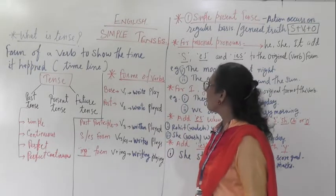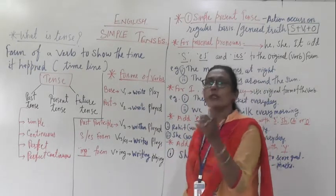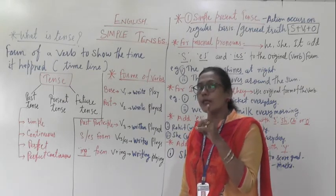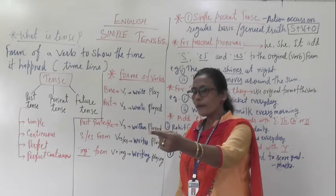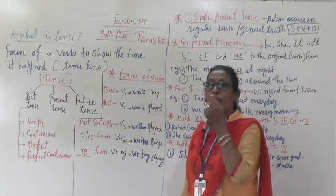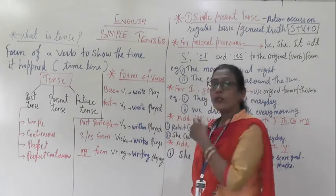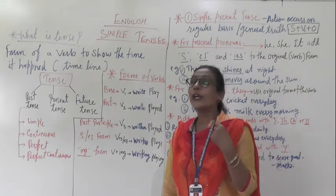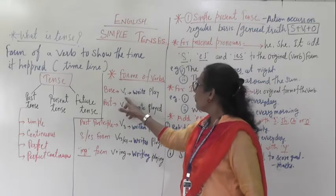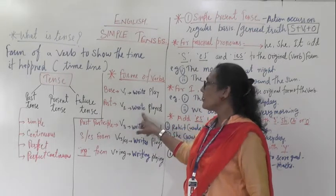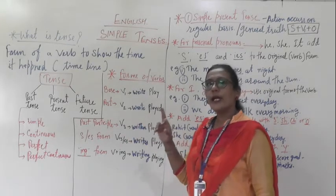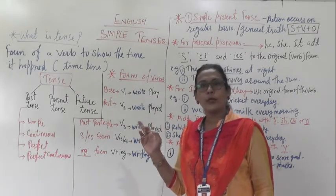See the example. Base form: write. V1 is write — that is present tense. V2 — I wrote — that is past tense. Past participle V3 is written. So: write, wrote, written. When I am asking have you written? — that uses V3. So V1 is write, V2 is wrote, past participle is written.